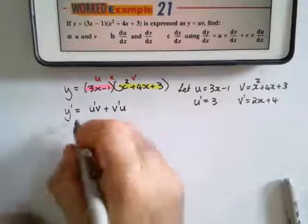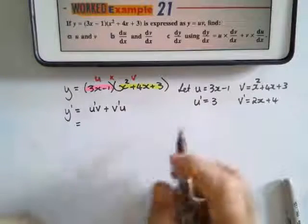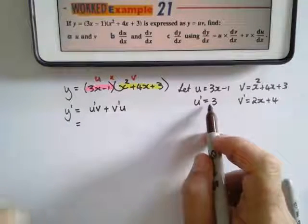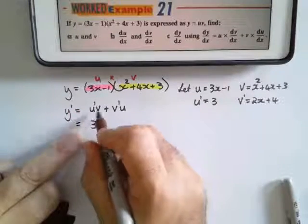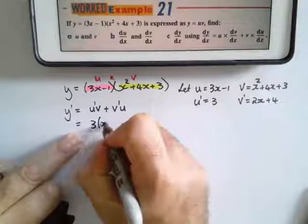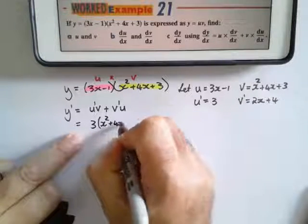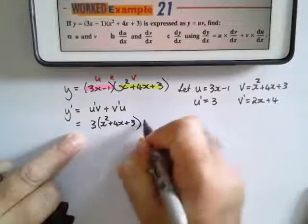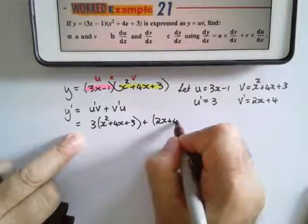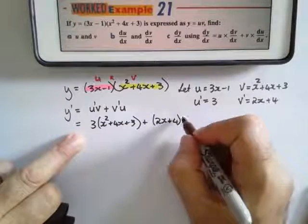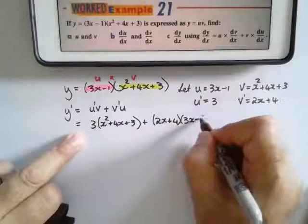All I do now is substitute these values in there, which means the derivative of y: the derivative of u is 3 times v, and v equals x squared plus 4x plus 3, plus the derivative of v which is 2x plus 4 times u which is 3x minus 1.